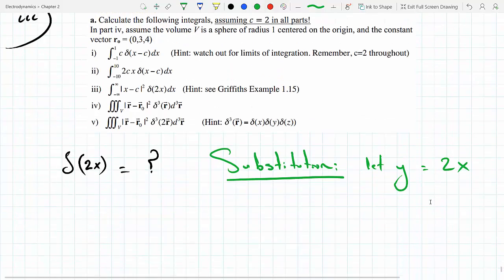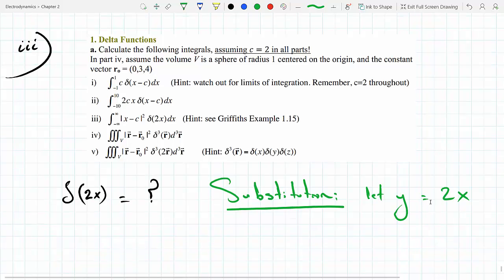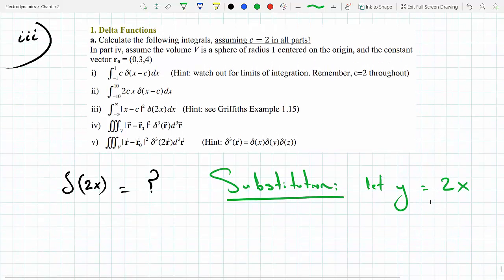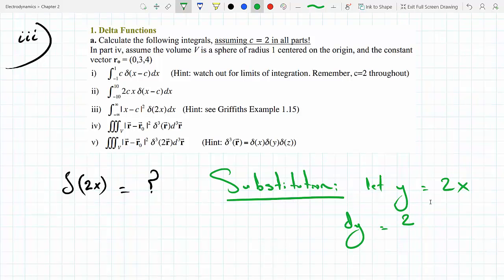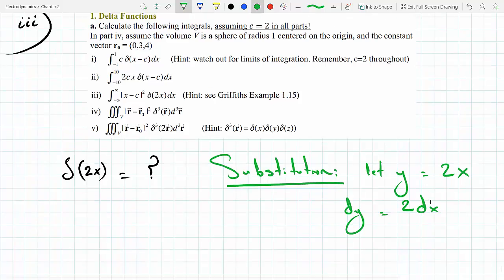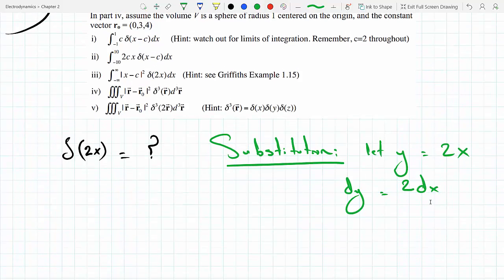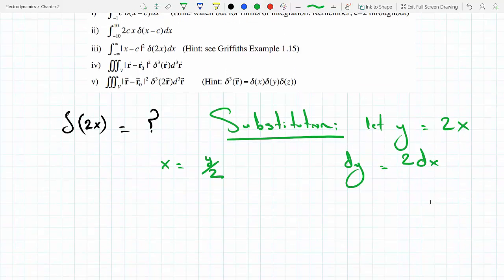Because then dy is gonna become 2dx, which means dx is dy over 2, and also x will become y over 2.